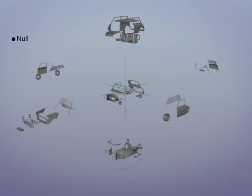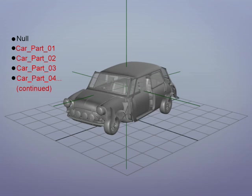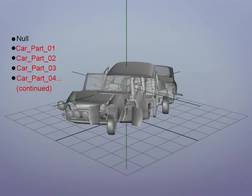Here, more than 200 objects form this car. If we rotate each object, the car breaks apart. This is because each object is rotating around its own pivot point.